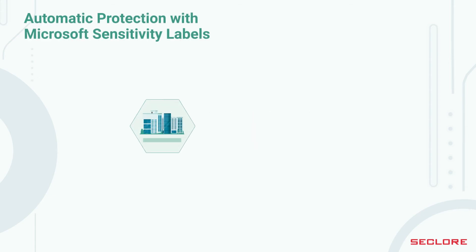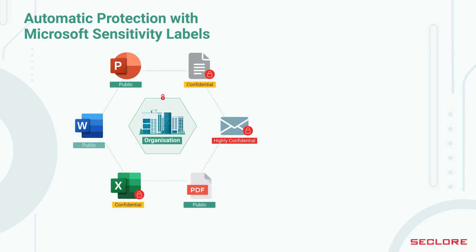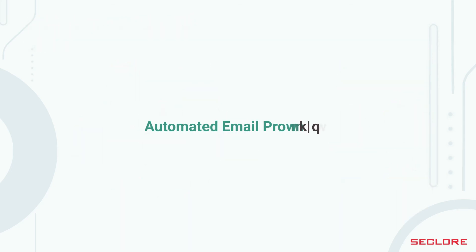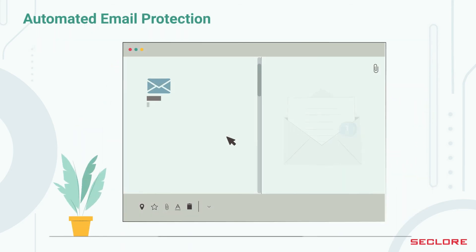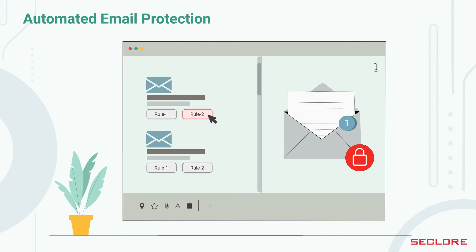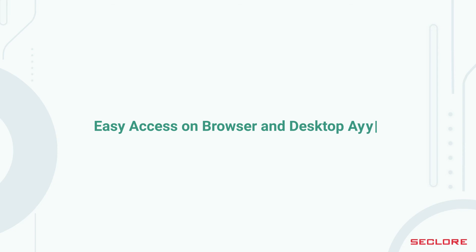Seclore leverages Microsoft sensitivity labels to automatically protect classified sensitive documents and emails. Automated email protection: set rules at the enterprise level to automatically protect your emails that may contain sensitive data or are being sent outside the organization.